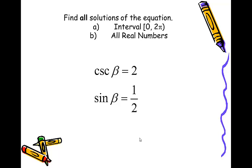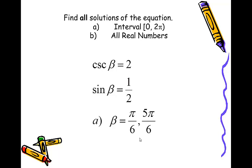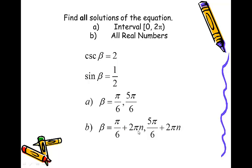Cosecant equals 2 means sine is 1/2. You should be thinking quadrant 1 and quadrant 2, and thinking 30 degrees. So the two angles between 0 and 2 pi are pi over 6 and 5 pi over 6, and we use pi over 6 plus 2 pi n and 5 pi over 6 plus 2 pi n, because 2 pi is the period of the sine curve. This produces an infinite number of angles beta that have a sine of 1/2, therefore a cosecant of 2.